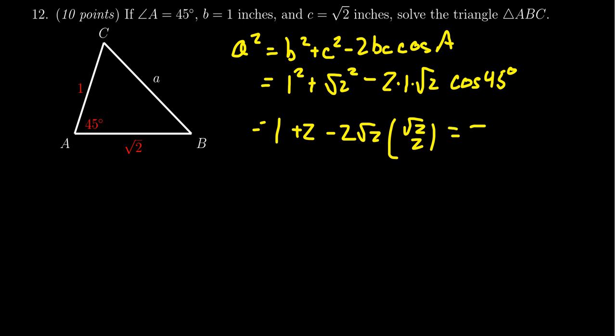1 plus 2 is 3. We're going to have a square root of 2 times the square root of 2. That's a 2. And then these 2s cancel out. So you end up with a minus 2. So in the end, we end up with a 1 for that. So a² is equal to 1. Taking the square root, we get that little a is equal to positive 1 inch.